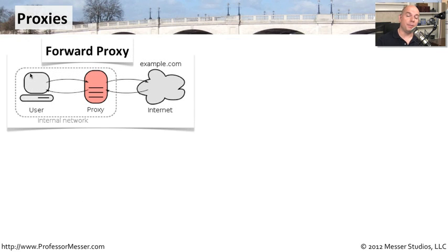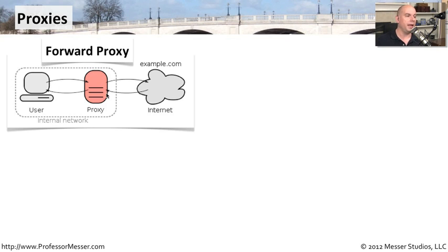There are three common ways to see a proxy server set up. A common way that we were just talking about is called a forward proxy, where you have a user on an internal network talking to a proxy on an internal network, and that proxy is then going out to the internet to make the request and send the information back to the end user.